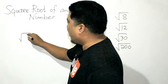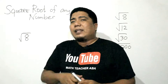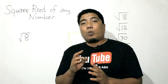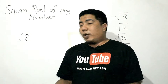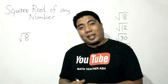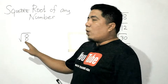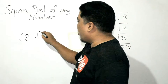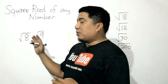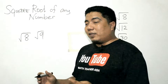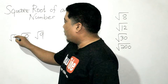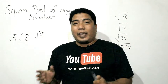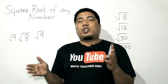So how do we get the approximation of these given square roots? Let us try first the square root of 8. The technique here is very simple. First, you need to think of the two perfect squares between which the square root of 8 is located. The next perfect square after 8 is square root of 9, and the previous perfect square before 8 is square root of 4.